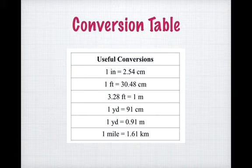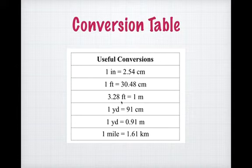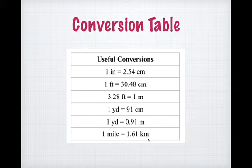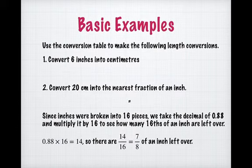Here's the conversion table with the values you'll need. One inch is approximately 2.54 centimeters; one foot is 30.48 centimeters; one meter is about 3.28 feet; one yard is around 91 centimeters, or equivalently 0.91 meters — which is why a yardstick and a meter stick are relatively the same thing. One mile is approximately 1.61 kilometers. If a question gives you a specific conversion to use, use that one; otherwise these standard values are fine.